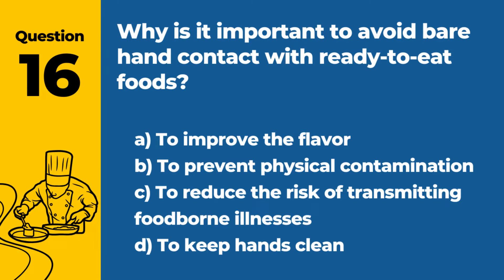Question 16. Why is it important to avoid bare-hand contact with ready-to-eat foods? a. To improve the flavor. b. To prevent physical contamination. c. To reduce the risk of transmitting foodborne illnesses. d. To keep hands clean. Answer c. To reduce the risk of transmitting foodborne illnesses. Avoiding bare-hand contact with ready-to-eat foods is important to reduce the risk of transmitting foodborne illnesses.